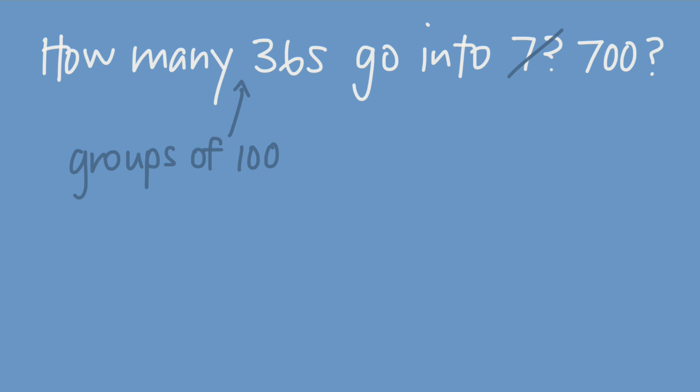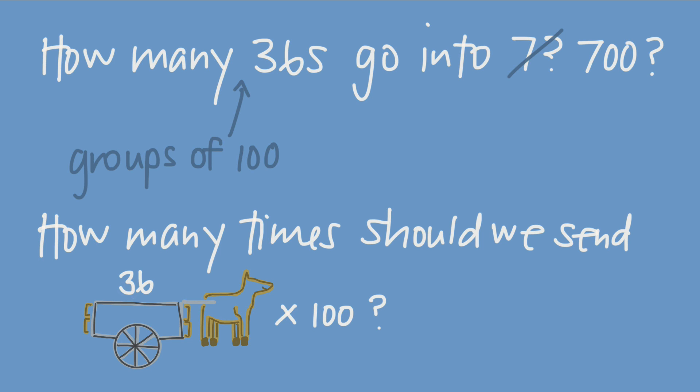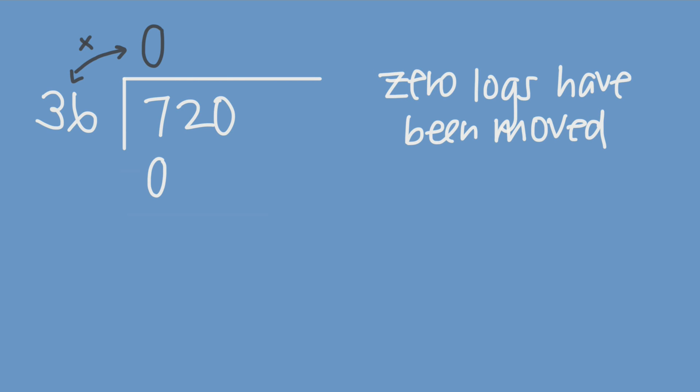The long division process allows us to really be asking, how many groups of 100 36s can we fit into 700? So this is like asking, how many times does the village need to send its group of 100 carts? Remember that 100 carts that can move 36 logs each would move 3,600 logs at once. We definitely don't need to move that many logs because we only have 700 in the first place. We can't fit a single group of 3,600 logs into 700 logs, so the village should send this group of 100 carts 0 times.